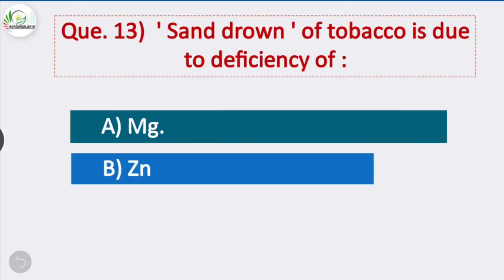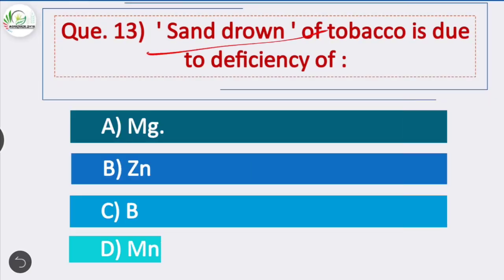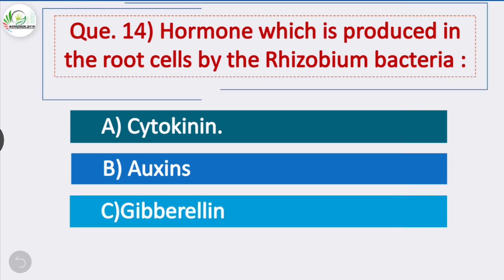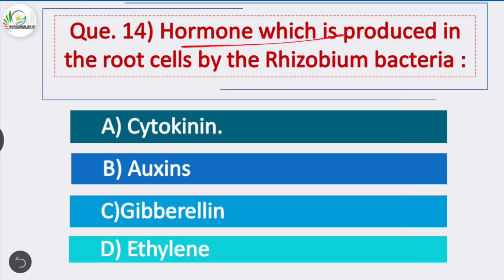Question 13: Sand drown of tobacco is due to deficiency of — option is correct — due to deficiency of magnesium, sand drown symptom in tobacco occurs. Question 14: The hormone which is produced in the root cells by the Rhizobium bacteria — option A is correct — cytokinin is the hormone produced in the root cells by Rhizobium bacteria.